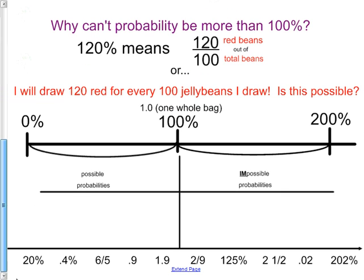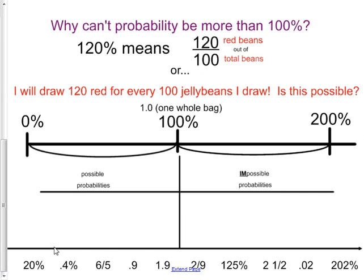So let's see how you did down here. I'm going to go ahead and drag them. So 20%, that is between 0 and 100%. So that is a possible probability that it will rain tomorrow. 0.4 chance is greater than 0%, less than 100%. So that is a possibility as well. 6 fifths, that would equal 1 and 1 fifth. You can see that's more than one whole. So 6 fifths is not a possible probability.